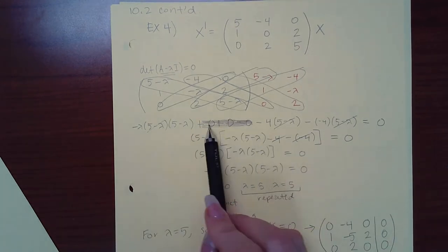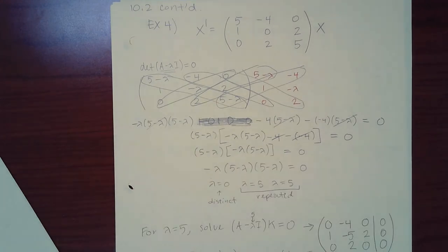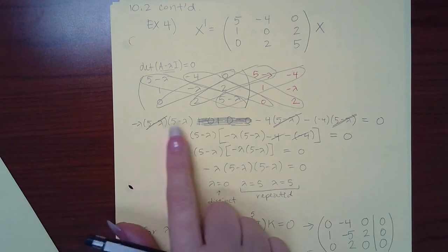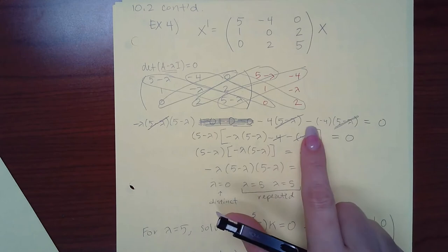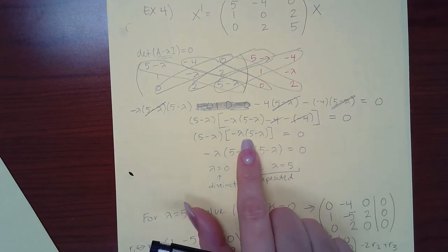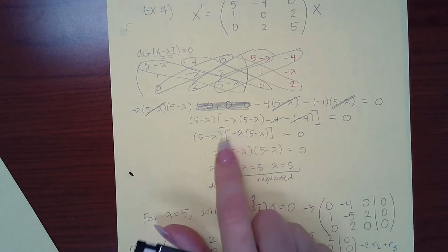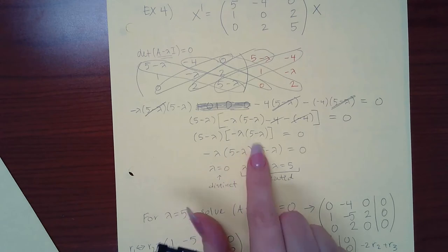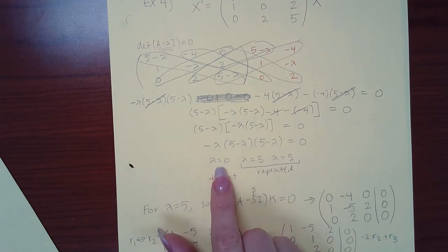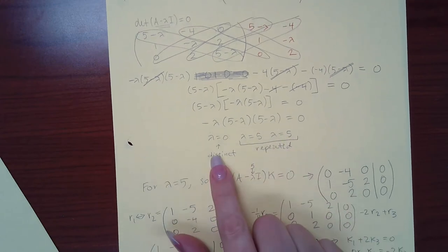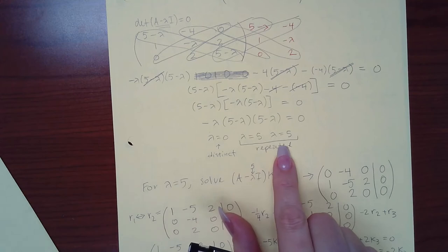Every single remaining term had a (five minus lambda) in it, so we factored that out. After factoring one (five minus lambda) out, we end up with negative lambda times (five minus lambda), negative four, and negative negative four — that's negative plus four, which cancel. All that remains inside the bracket is negative lambda times (five minus lambda). Setting each factor equal to zero gives lambda equals zero, lambda equals five, and lambda equals five — so we have one distinct and two repeated.